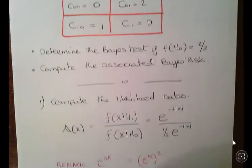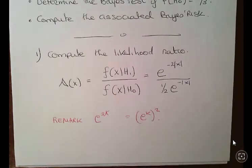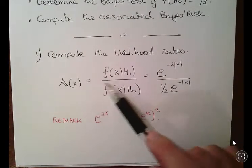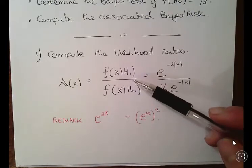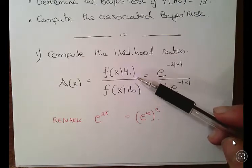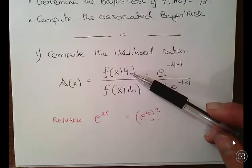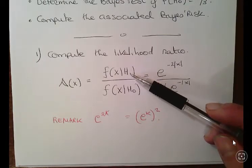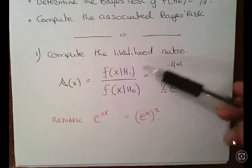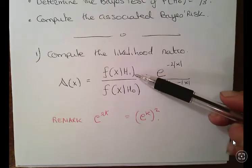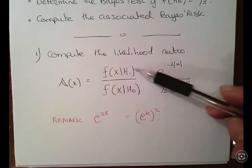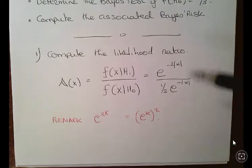So the first thing we will do is compute the likelihood ratio. So lambda of x is the ratio of the two conditional probability functions. Just as a remark, H1 usually goes on top in a lot of these. The H1 is usually favored on top, just if you try to memorize formula, that helps.